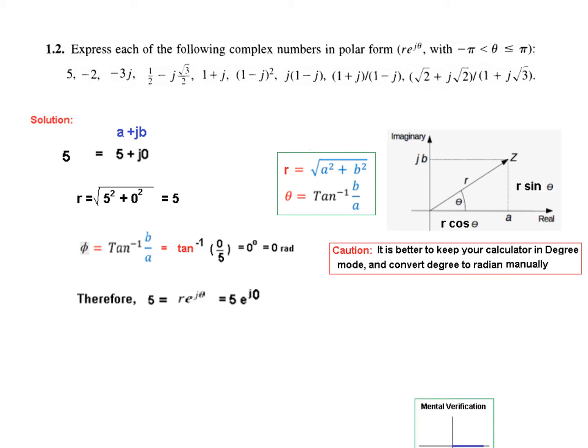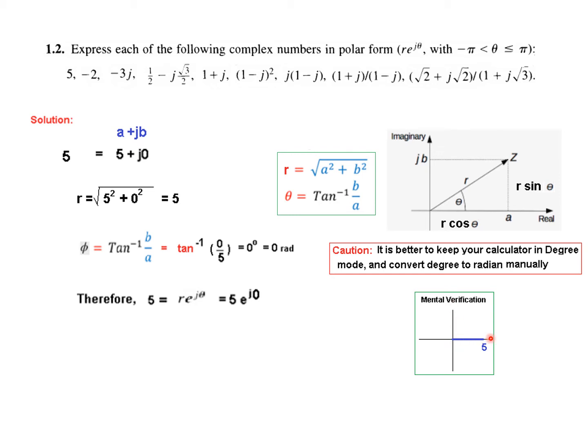We can verify mentally using the diagram. The real axis is 5 and the imaginary axis is 0, so there is no imaginary component. The line lies along the real axis and you can clearly see that the angle will be 0.